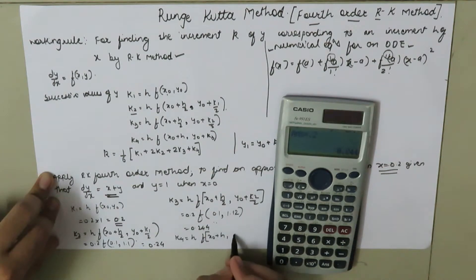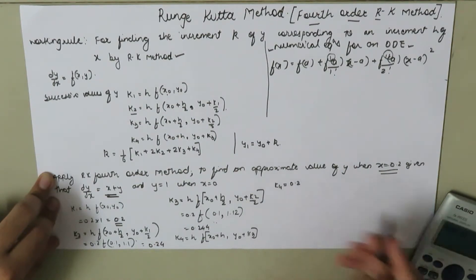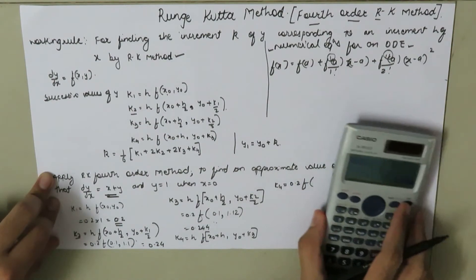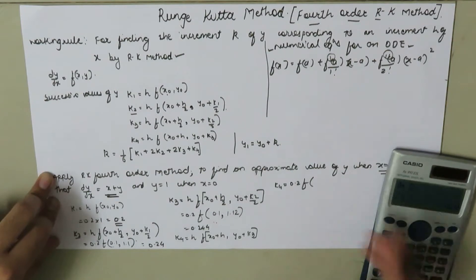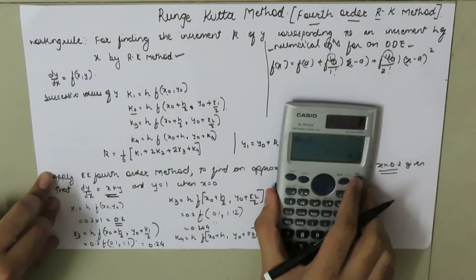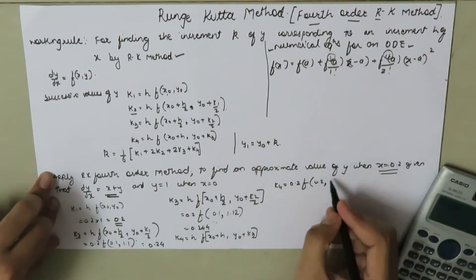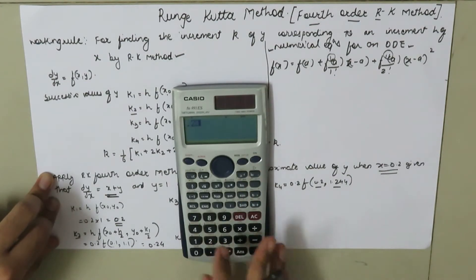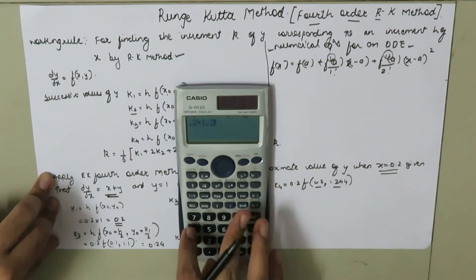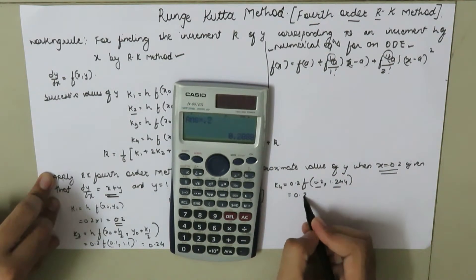k4 = h * f(x0 + h, y0 + k3). This is 0.2 * f(0 + 0.2, 1 + 0.244). So x = 0.2 and y = 1.244. The function value is 0.2 + 1.244 = 1.444. So k4 = 1.444 * 0.2 = 0.2888.